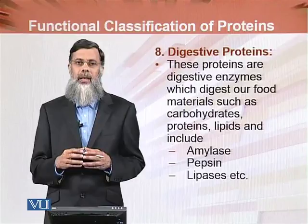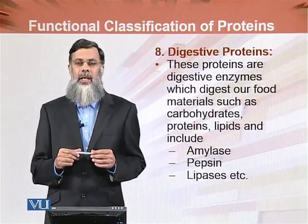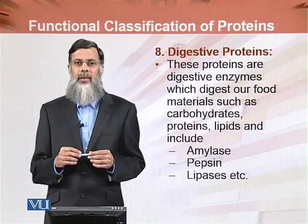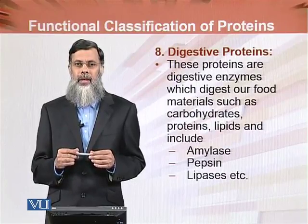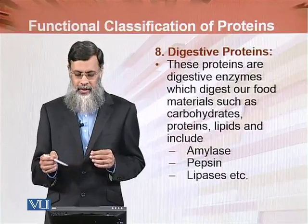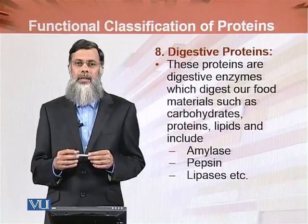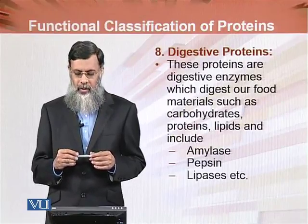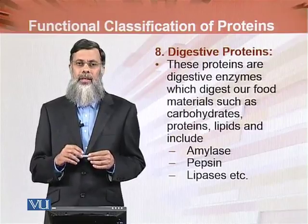Amylase functions to break down glycogen and starch into glucose and maltose molecules. Maltose is another enzyme present in the gastrointestinal tract. The other two digestive enzymes are chymotrypsin and trypsin, which are also present in the gastrointestinal tract. These enzymes, along with pepsin, cause the digestion of food.